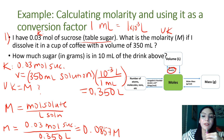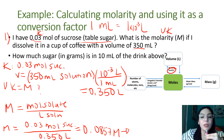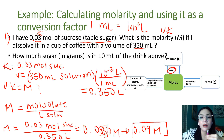We get 0.0857 molar. But we're limited by significant figures — 0.03 has one sig fig and 0.350 has three, so we can only have one sig fig. We round: 0.09 molar is the concentration of sugar in this coffee solution.